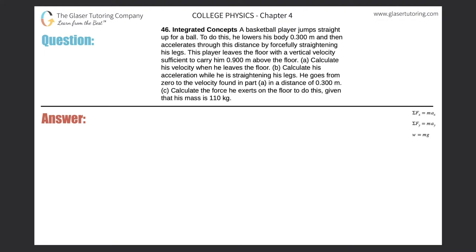Number 46, integrated concepts. A basketball player jumps straight up for a ball. To do this, he lowers his body 0.3 meters and then accelerates through this distance by forcefully straightening his legs. This player leaves the floor with a vertical velocity sufficient to carry him 0.9 meters above the floor. Letter A: calculate his velocity when he leaves the floor.